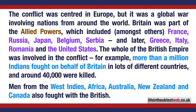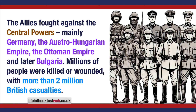The whole of the British Empire was involved in the conflict. For example, more than a million Indians fought on behalf of Britain in lots of different countries, and around 40,000 were killed. Men from the West Indies, Africa, Australia, New Zealand, and Canada also fought with the British. The Allies fought against the Central Powers, mainly Germany, the Austro-Hungarian Empire, the Ottoman Empire, and later Bulgaria.